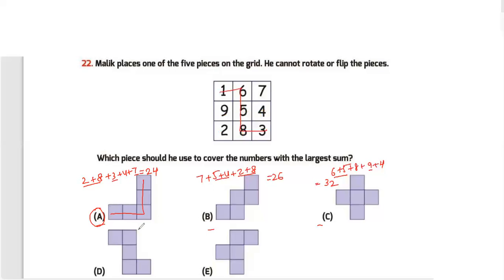For option D, the numbers are 1, 6, 5, 8, 3 — that gives 7, then 10, then 28 total.